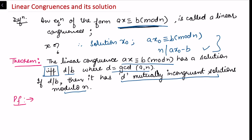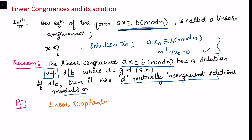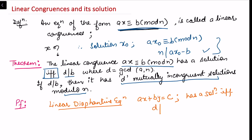To prove the first assertion, I will use the linear Diophantine equation, given as ax + by = c. In an earlier video we covered the linear Diophantine equation and its solutions. The condition for a solution is: it has a solution if and only if d divides c, where d is the gcd of a and b.